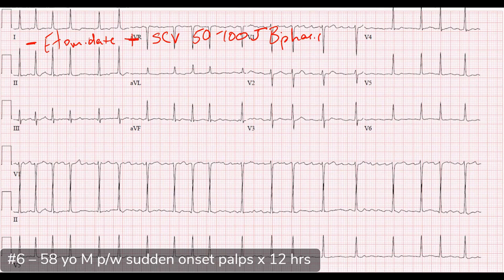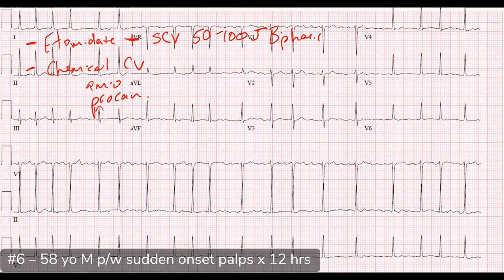AFib can be a bit challenging to shock sometimes; flutter is usually easy to get patients out of. For ventricular tachycardia you'd start at least at 100, probably jumping to 200 in those patients. For chemical cardioversion, typical antiarrhythmics include amiodarone, procainamide, or agents like flecainide or ibutilide.